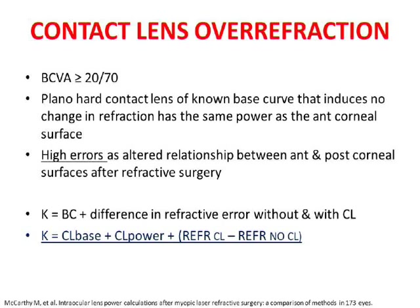The contact lens over-refraction method is not really recommended anymore. First, it requires the patient's visual acuity to be better than 6/12. Second, you need a plano RGP lens of known base curve and known power. You place it on the patient, check refraction with and without the contact lens, feed those values into the formula, and it gives you the K value. Each person has devised their own technique with a corresponding formula — you feed in your values and get the output.